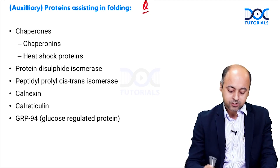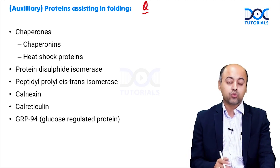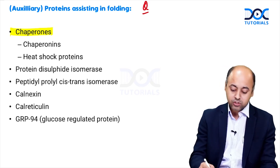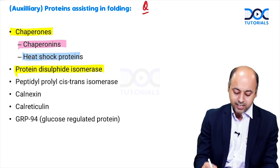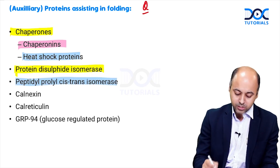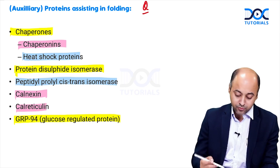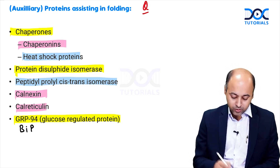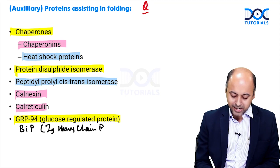One is the auxiliary proteins which assist in folding — a very frequently asked question. You should know the names of these proteins. The first and most important are the chaperones, which include the chaperonins and the heat shock proteins. Then we have protein disulfide isomerase, proline cis-trans isomerase, calnexin, calreticulin, GRP94, and BiP — the immunoglobulin heavy chain binding protein.